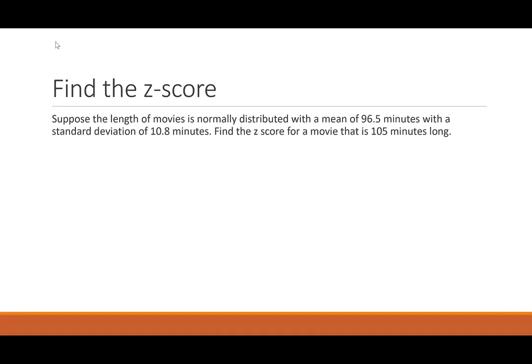Suppose this time I have the same mean of 96.5 and the same standard deviation of 10.8, but I want to know the z-score for a movie that is 105 minutes long. So I do my conversion. I do 105, my data point, minus the mean, 96.5, divided by 10.8, the standard deviation. It says 0.79.